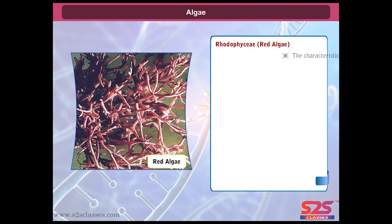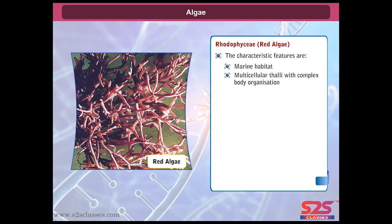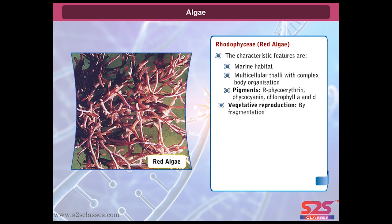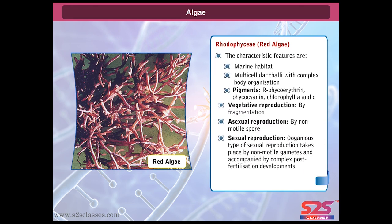Rhodophyceae, or red algae, are characterized by a marine habitat and multicellular thallus with complex body organization. Pigments include phycoerythrin, phycocyanin, chlorophyll A and D. Vegetative reproduction is by fragmentation, and asexual reproduction is by non-motile spores. Sexual reproduction is oogamous, taking place by non-motile gametes and accompanied by complex post-fertilization developments. Examples include Polysiphonia, Gracilaria, and Gelidium.